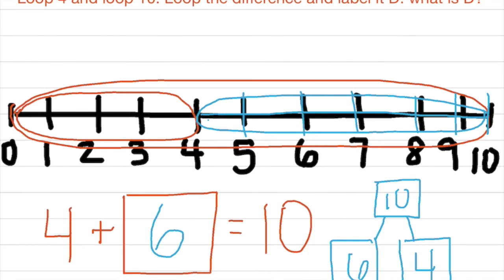Our part that was circled was 4, our total or our whole was 10, and so we use that information to find out that the missing part that was unlooped was 6.